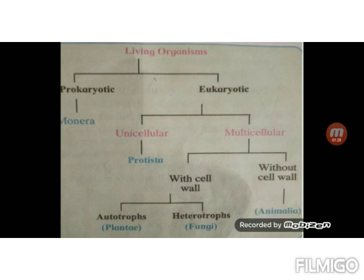If we go further, the eukaryotic organisms are divided into unicellular and multicellular organisms. Unicellular organisms are the organisms having a single cell, e.g. amoeba. Multicellular organisms are with many cells, e.g. human beings.